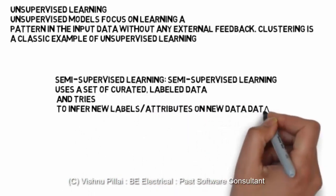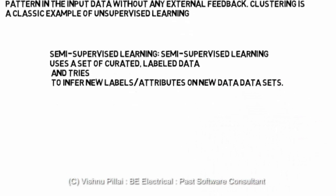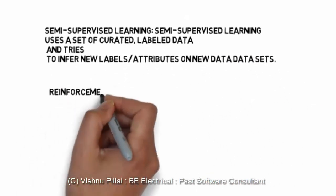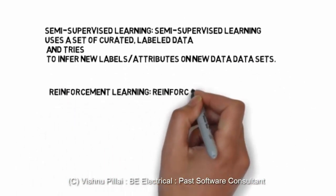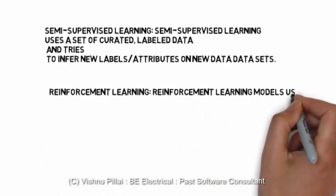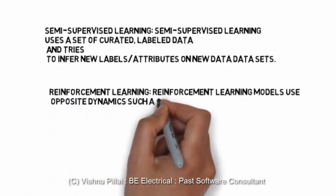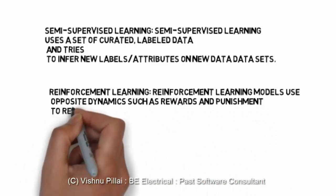We will also see the clustering method for unsupervised learning. The other kind of learning is reinforcement learning. Reinforcement learning models use opposite dynamics such as rewards and punishment.